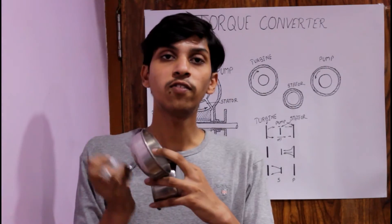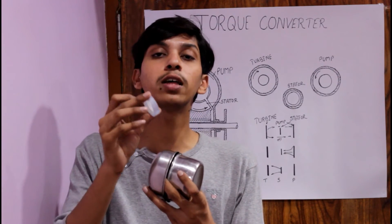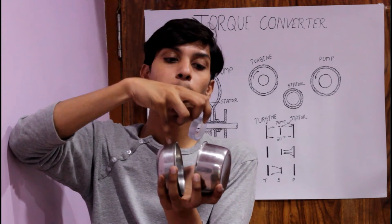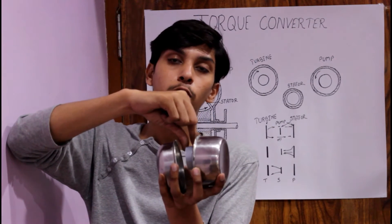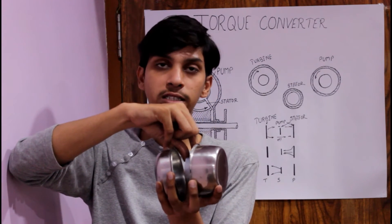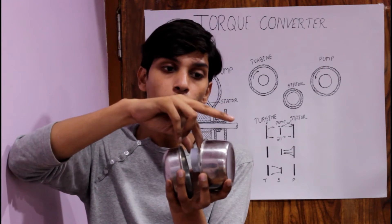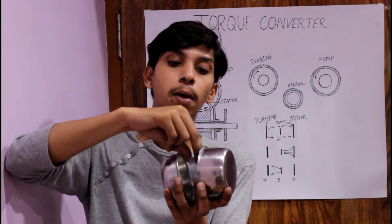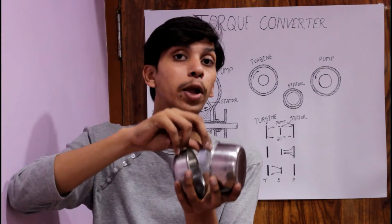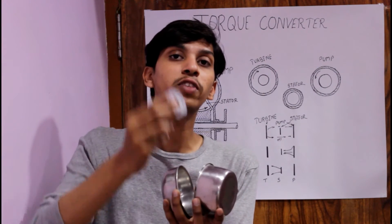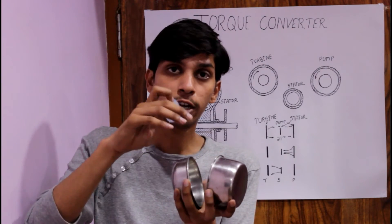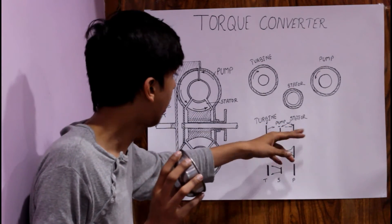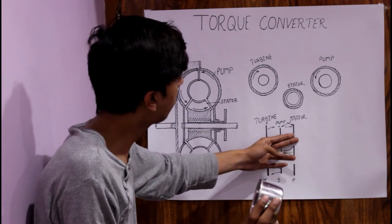If this one is a turbine, this one is a pump, and this one is a stator — the stator is placed in between the turbine and the pump. When the fluid coupling occurs, the fluid comes from the pump toward the center and strikes the stator. Because of the design of the stator's blades, the oil is redirected to the turbine at almost 90 degrees.